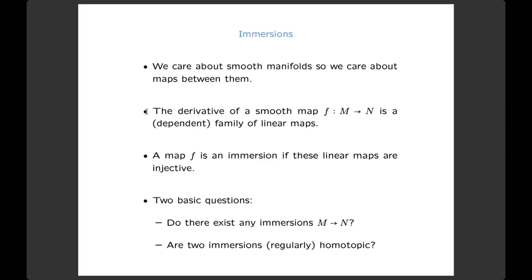Now I'm going to sketch the rough ideas of the mathematics. Just before I talk about eversion, I'll talk about a similar-sounding word: immersion. You need to understand that to understand what an eversion is. Smooth manifolds are objects we care about, and from 20th century mathematics, if you care about objects, you care about their maps. If you have a pair of smooth manifolds, you care about the smooth maps between M and N.